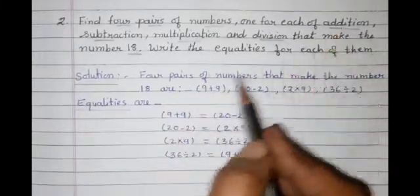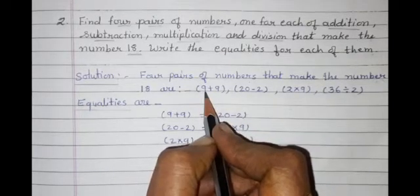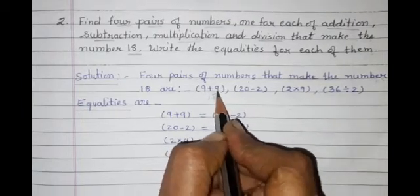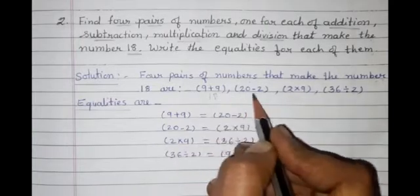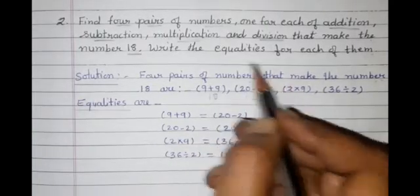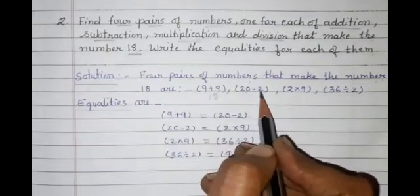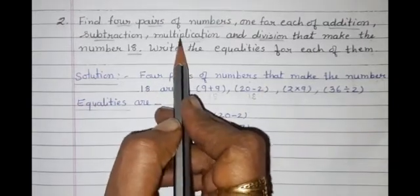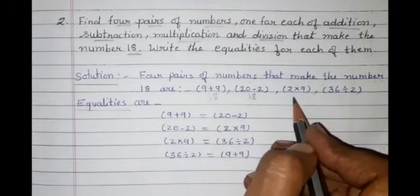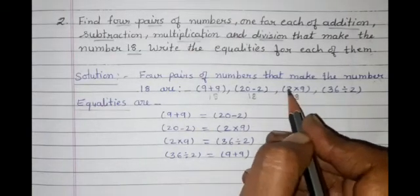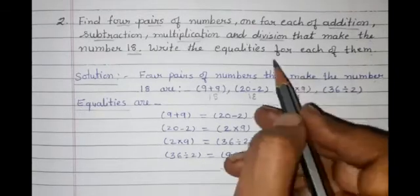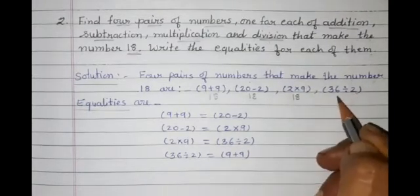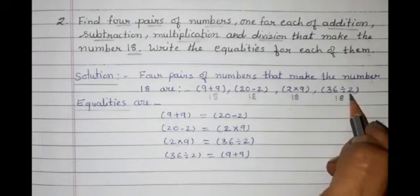For the first operation, addition: 9 plus 9 is 18. So the first pair is (9 plus 9), which is also called an expression. For subtraction: 20 minus 2 is 18, so the second pair is (20 minus 2). For multiplication: 2 multiplied by 9 is 18, so the third pair is (2 multiply 9). For division: 36 divided by 2 is 18, so the fourth expression is (36 divided by 2).